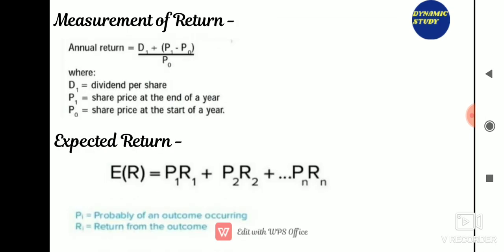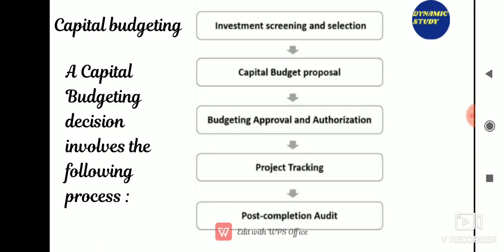Annual return is measured as: (Dividend per share + Share price at end of year − Share price at start of year) / Share price at start of year. Expected return can be measured as: E(R) = P1×R1 + P2×R2 + ... + Pn×Rn.